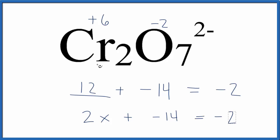This is Dr. B with the oxidation numbers for Cr2O7 2-, the dichromate ion, and thanks for watching.